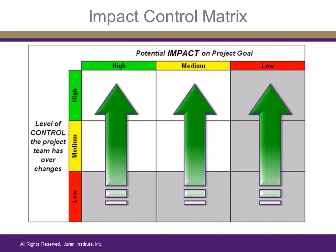A blank control matrix will be comprised of nine total cells, each indicating varied levels of impact and control. It should be noted that each cell may contain multiple potential causes. In some cases, you may have cells left entirely blank, while others contain multiple potential causes.